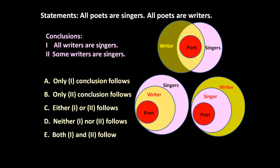Now let us check the conclusions. In one representation, all writers are singers follows. In another, all writers are singers does not follow. For the second conclusion, some writers are singers — checking across all three figures, some writers are singers holds in each case.